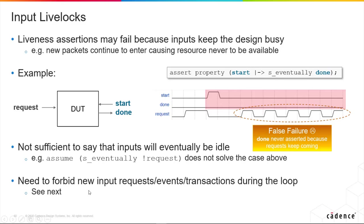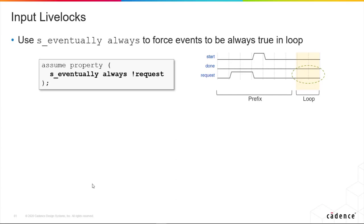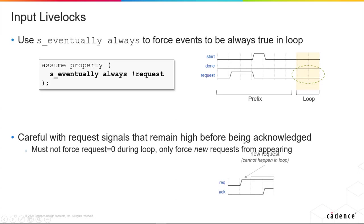What we need to do is forbid new input requests during the loop. Remember, during counter examples we need to prevent new requests. Using 'S_eventually not request' means we don't get a request in the loop ever. But we have to be careful with request signals that might stay high before being acknowledged — we don't want to force requests to zero during a loop, only prevent subsequent new requests from occurring during the loop.